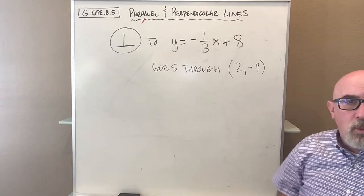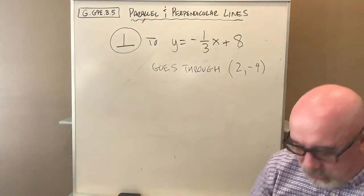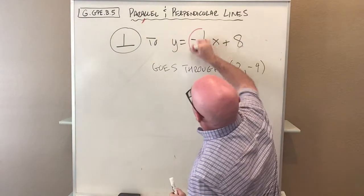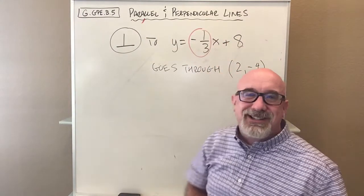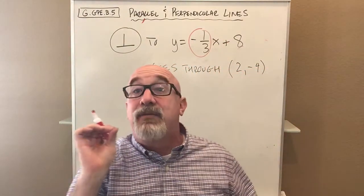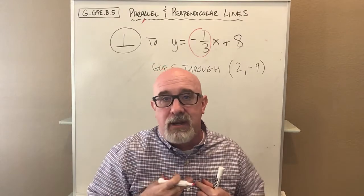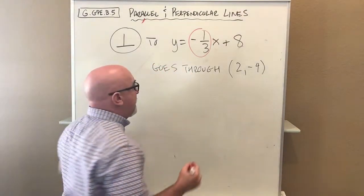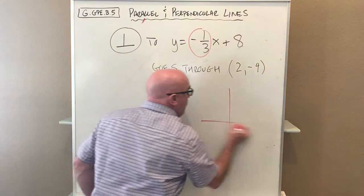We're going to pull a clue, and that clue is hiding right here. We're going to pull that slope. Now we're going to pull the negative reciprocal because our line wants to be perpendicular to that. Let me show you a visual of what we're doing.